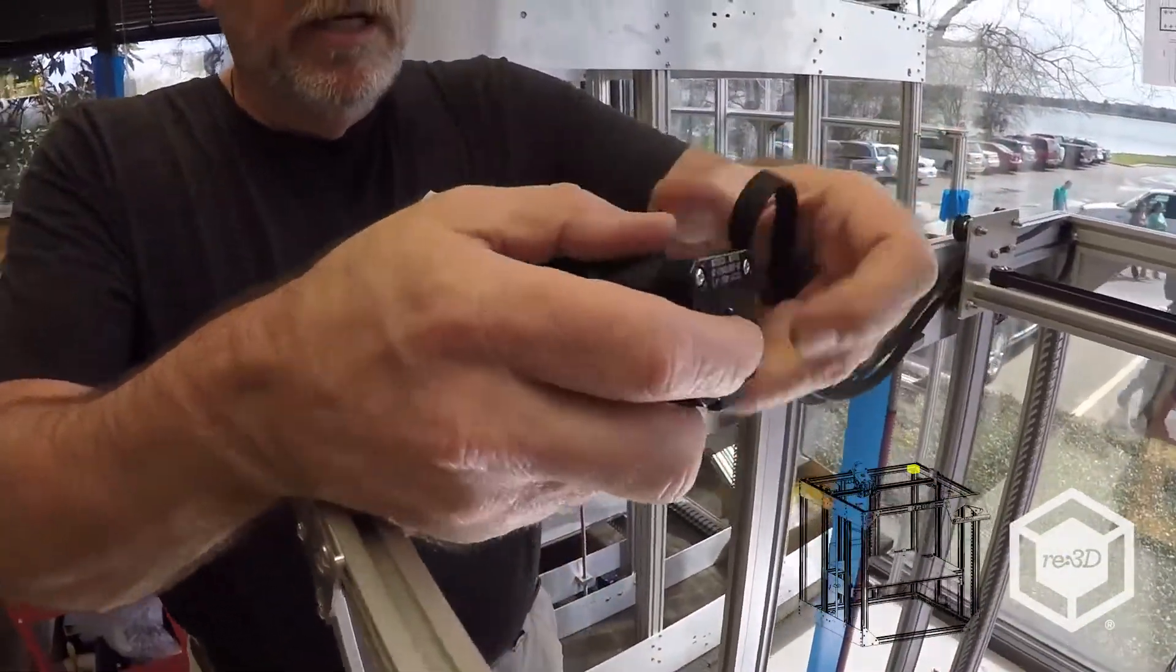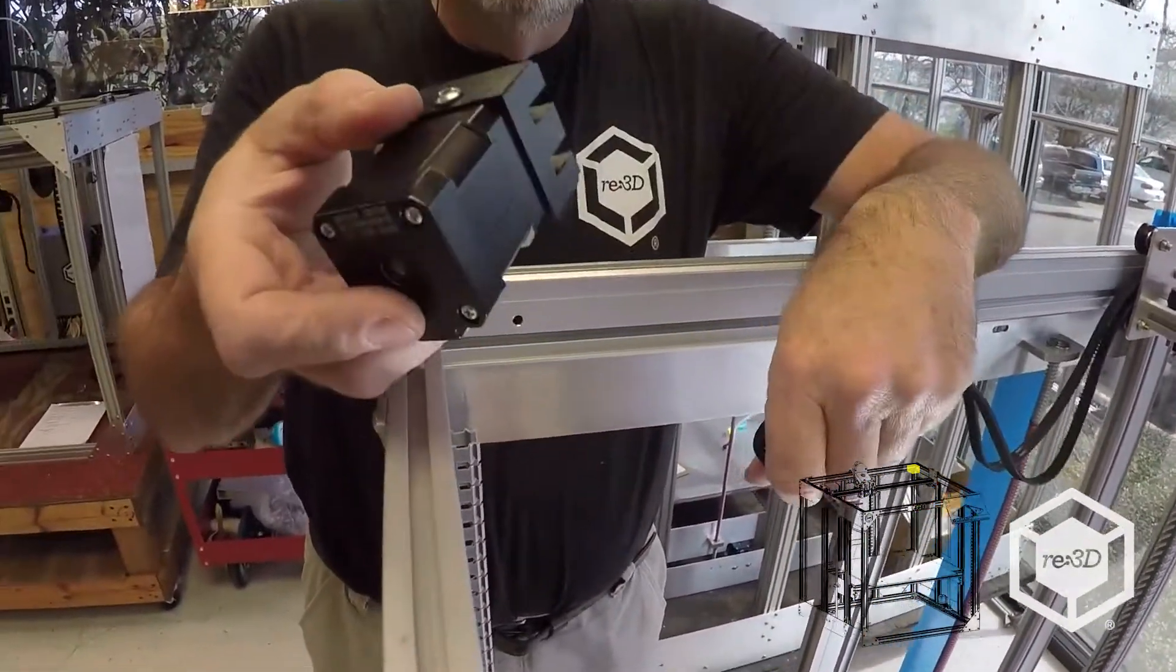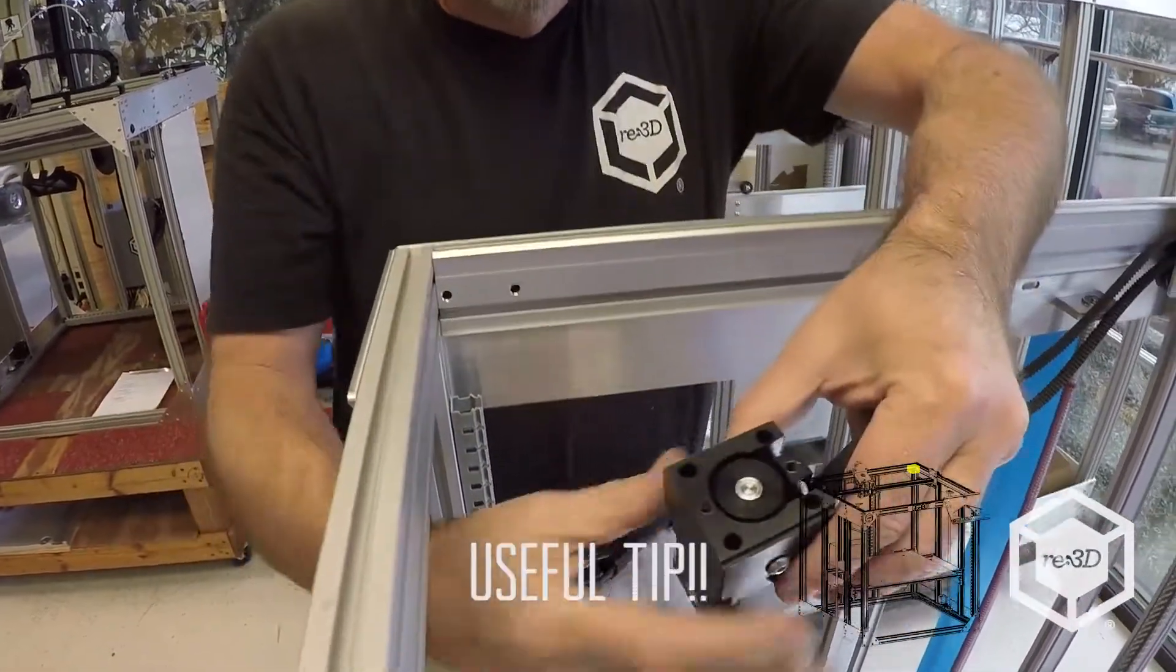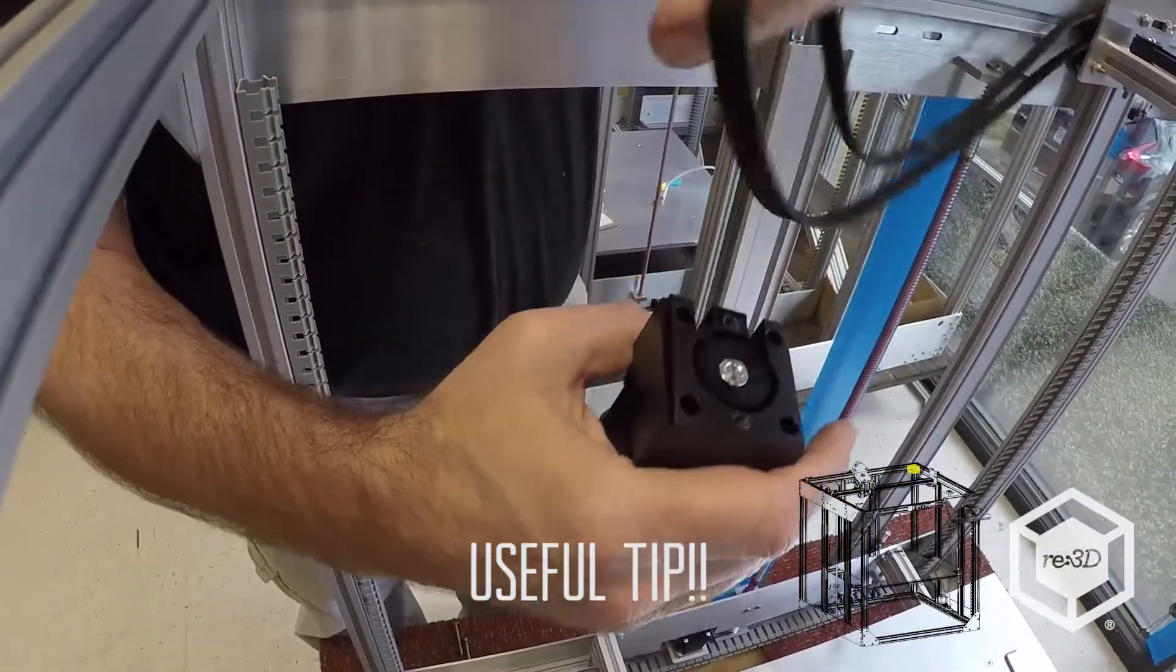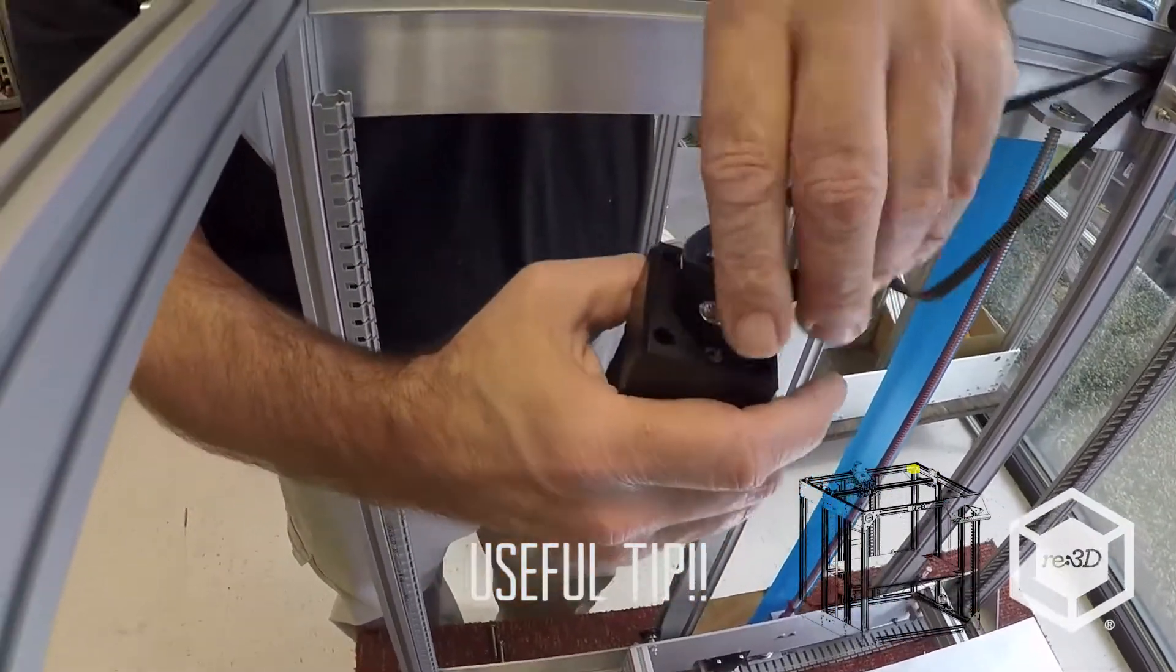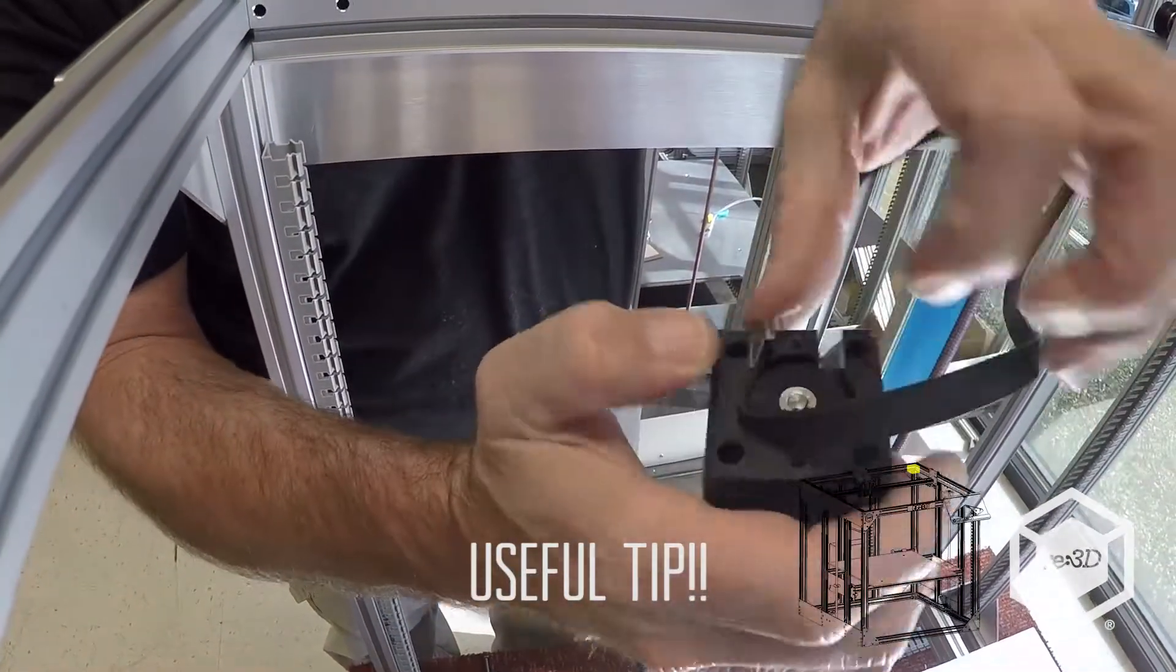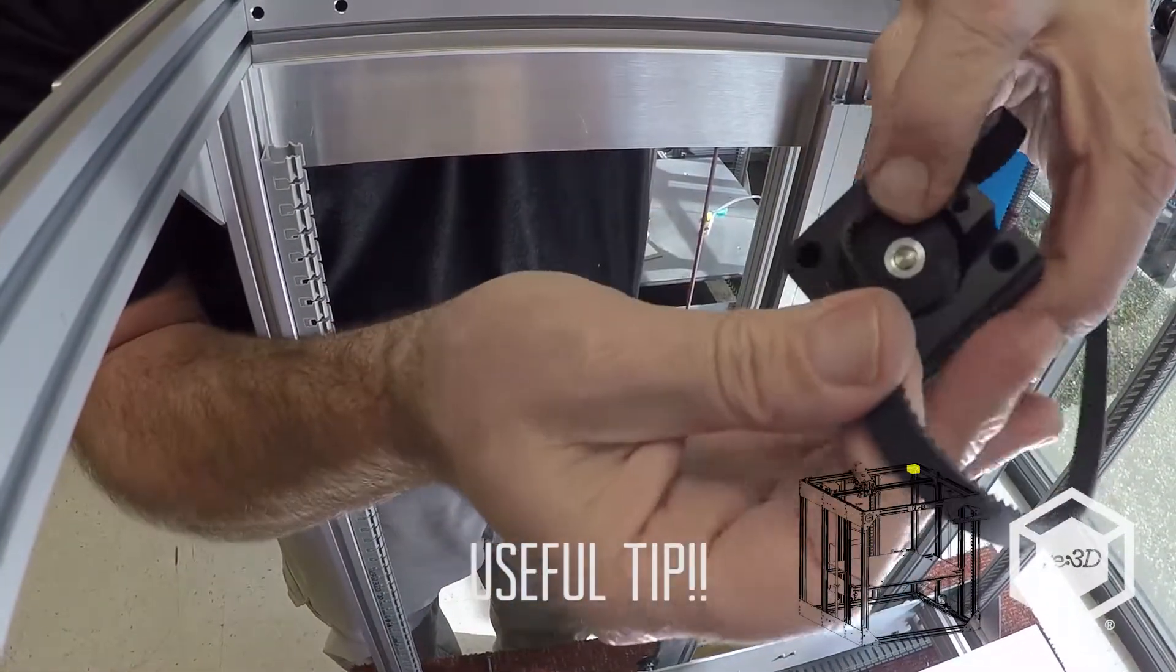This would be the right hand side Y motor. So you want to take it and start the belt in the pulley. And then just rotate it around.